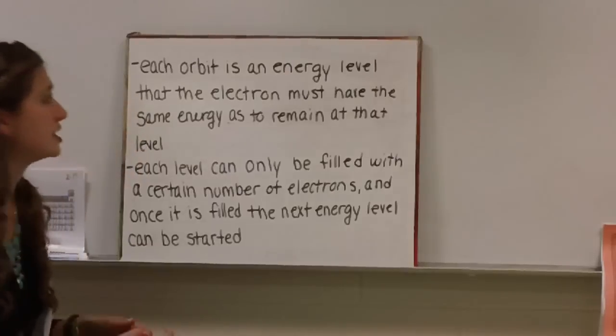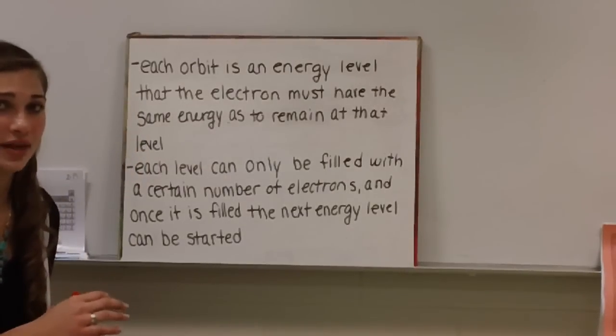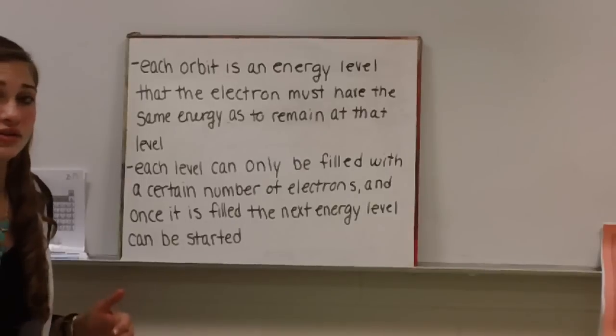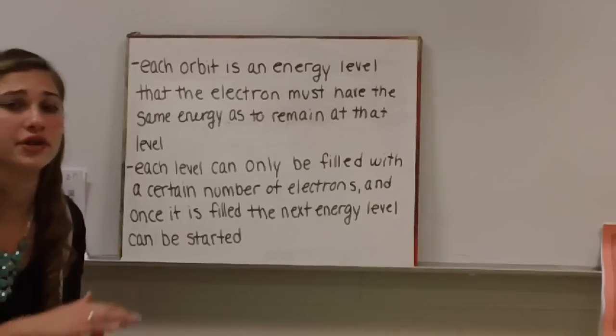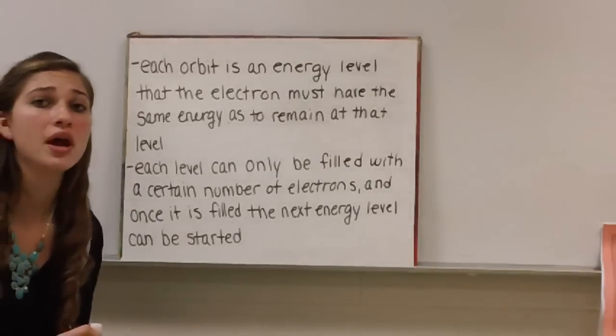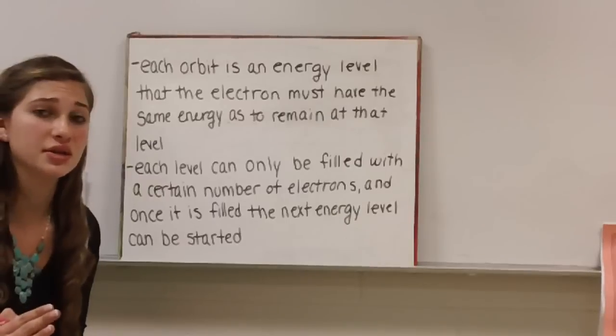Each orbit is a different energy level that the electron can be on, but it has to have that same energy as the energy level to be at that level. Each energy level can only be filled with a certain amount of electrons, and once that's filled, it can go on to the next energy level.